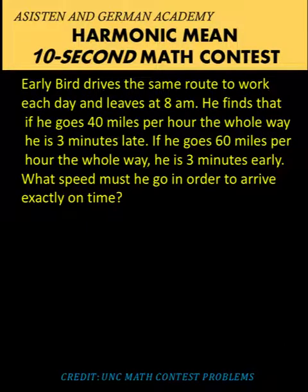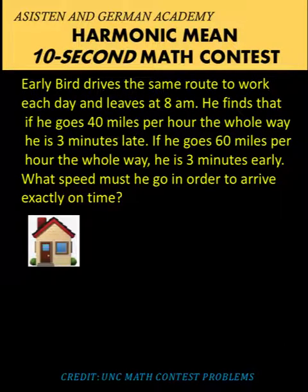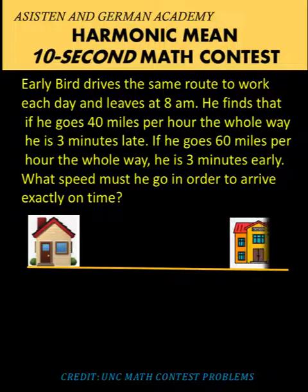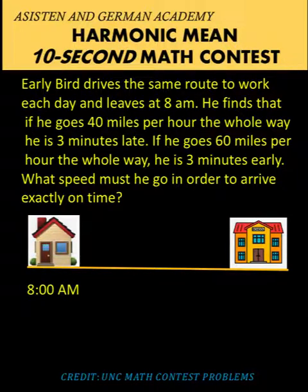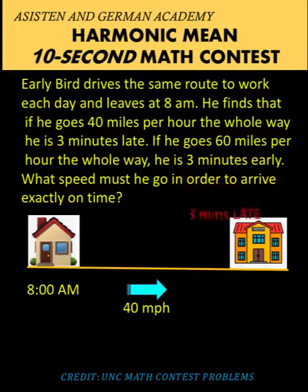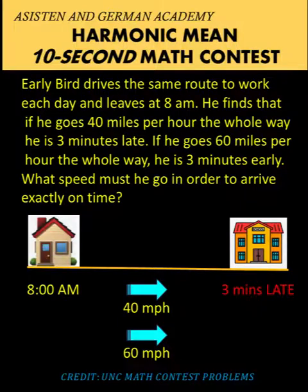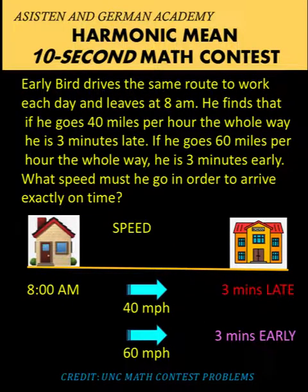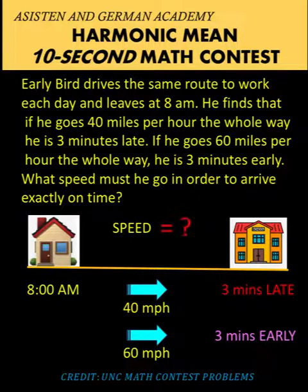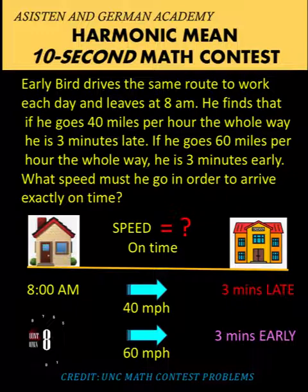Hi everyone, here is our math problem for today. Early Bird drives the same route to work each day and leaves at 8 a.m. He finds out that if he goes 40 miles per hour the whole way he is three minutes late; if he goes 60 miles per hour the whole way he is three minutes early. What speed must he go in order to arrive exactly on time? You can pause the video and see if you can solve this problem.